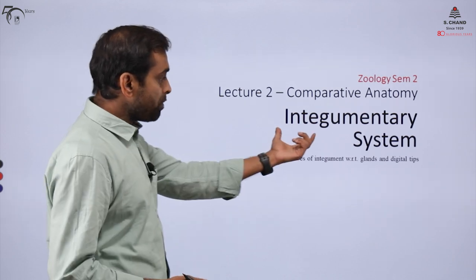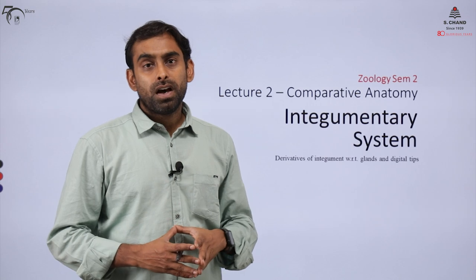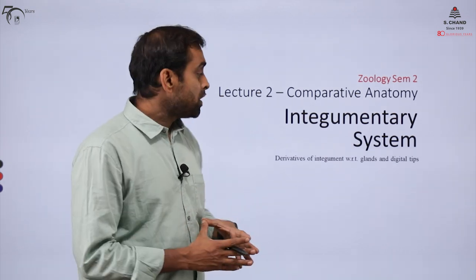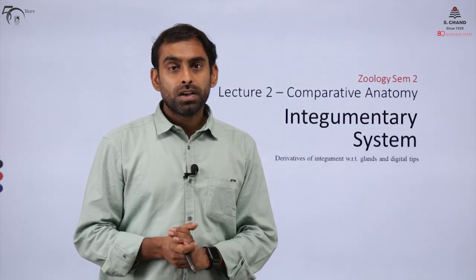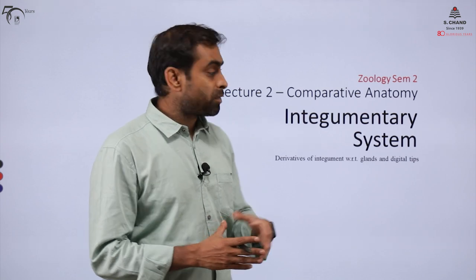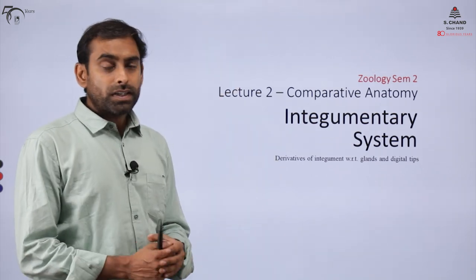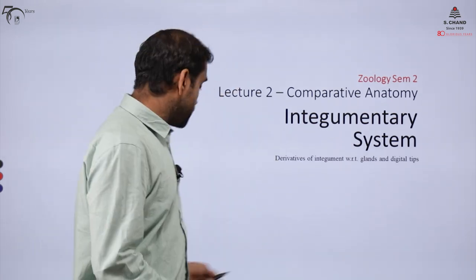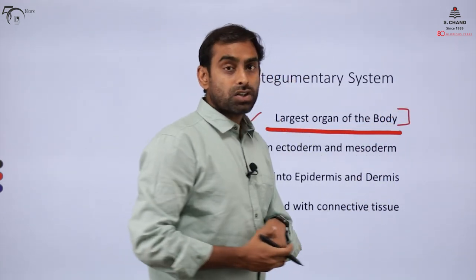In this video, we will not only talk about the basics of the ontogeny of the integumentary system, but also compare various types of derivatives of integuments — for example, keratinized modifications of digital tips as well as glandular epithelium. Before that, let us learn some basics: the integumentary system is the largest organ of the body.